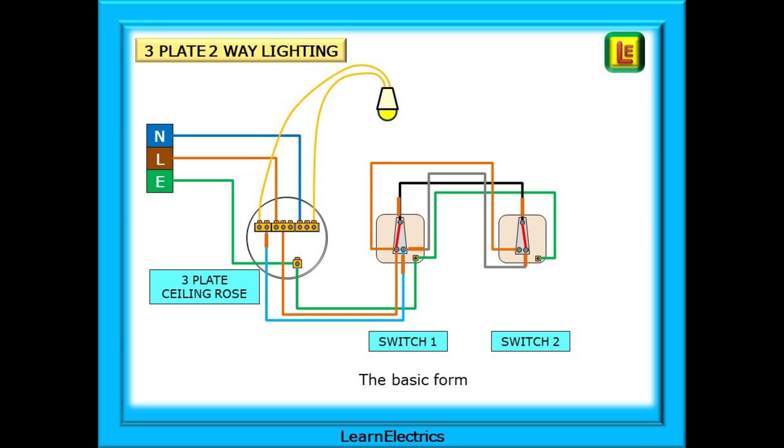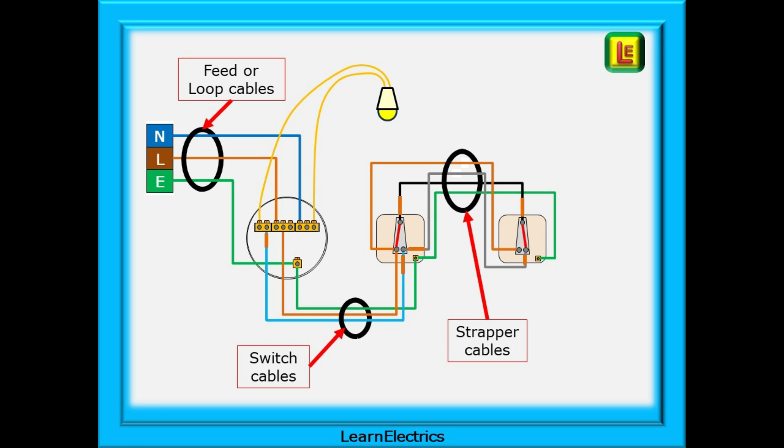This is a basic two-way lighting circuit with a three plate ceiling rose. We've laid it out this way so that it is easier to follow which parts of the circuit are actually under test at any one time. For most domestic installations the conductors will be installed as part of a grey sheathed cable. The feed cable or loop cable as it is sometimes called is often 1.5 square millimeter twin and earth. The switch cables will be the same but some electricians will use one millimeter twin and earth cable here and then the three core plus earth strapper cable for the two-way switching.